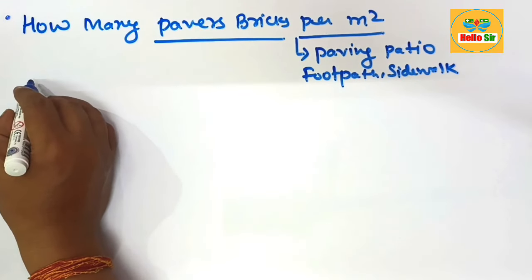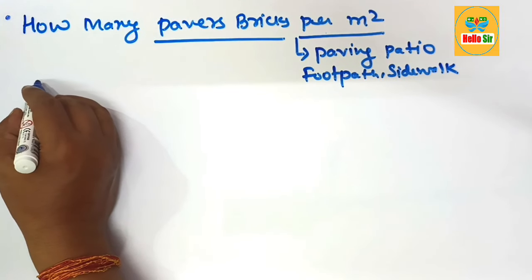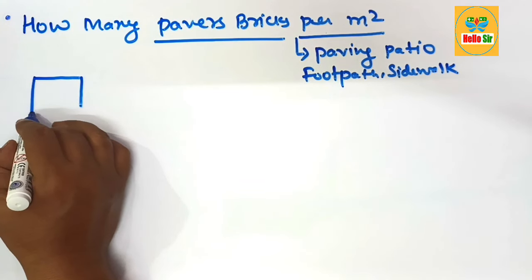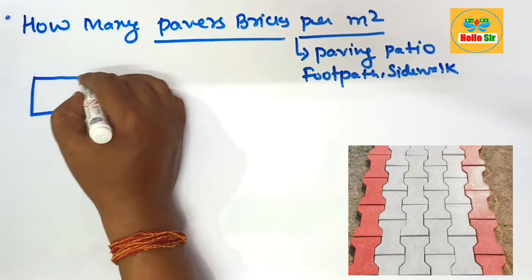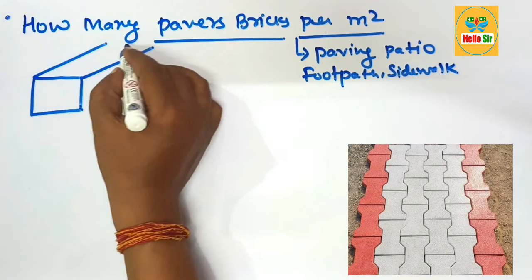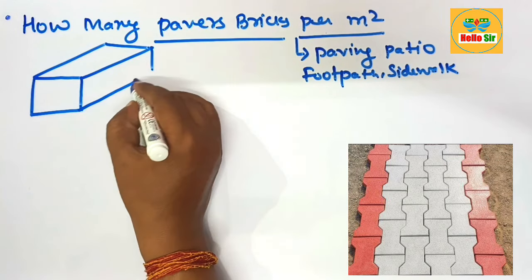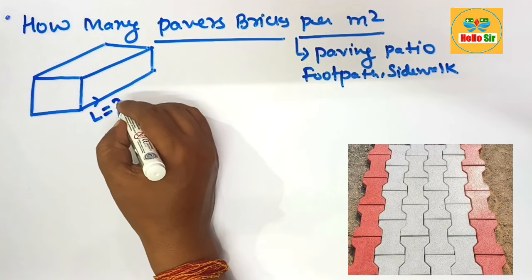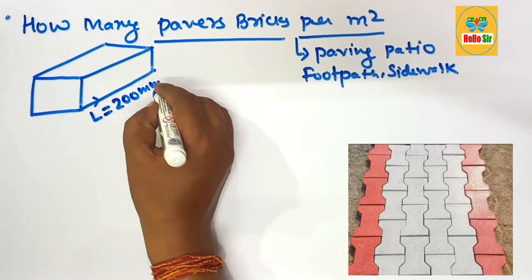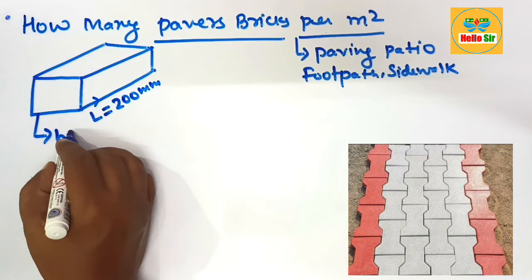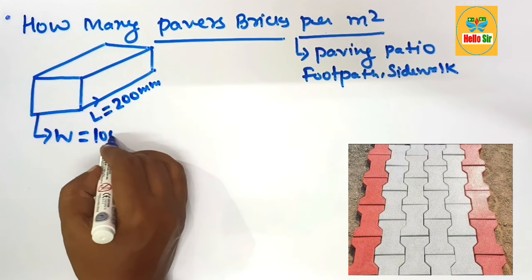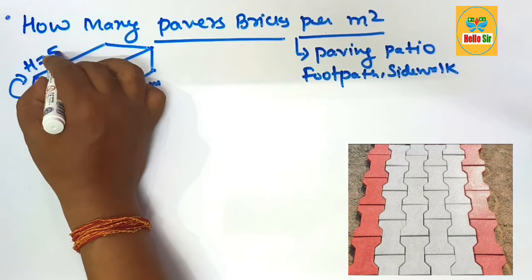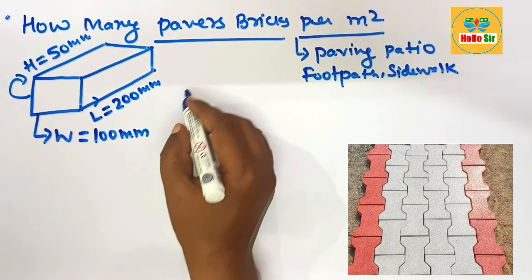First, let's understand the different dimensions for paving bricks. Here we make a rough diagram to understand their length, width, and depth. The length is about 200 mm, the width is about 100 mm, and the height is 50 mm.